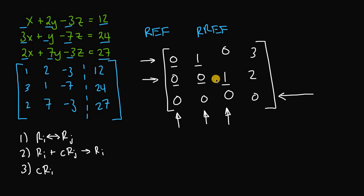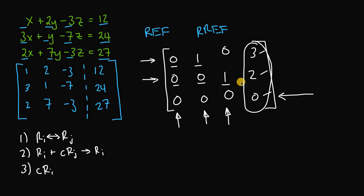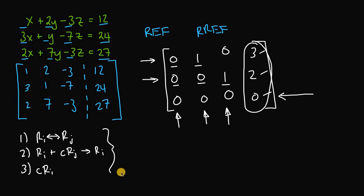Gauss-Jordan elimination converts a matrix into an equivalent matrix in reduced row echelon form, and the very last column is our solution set for all the unknown variables. In this white matrix example, the values 3, 2, and 0 in the last column would be our solution set. At this point I'm jumping into the second part, but I encourage you to try getting this augmented matrix into reduced row echelon form yourself first. If you get stuck or want to check your answer, go ahead and jump to the second part.